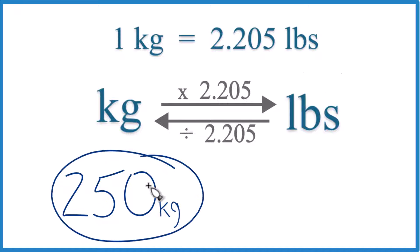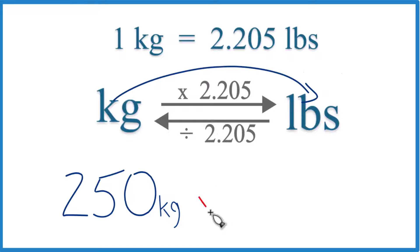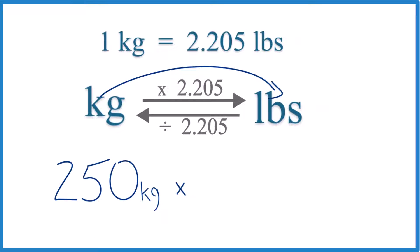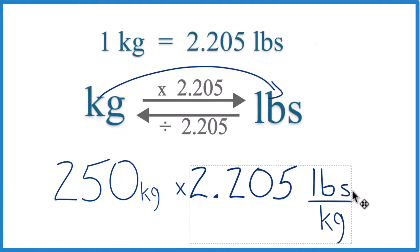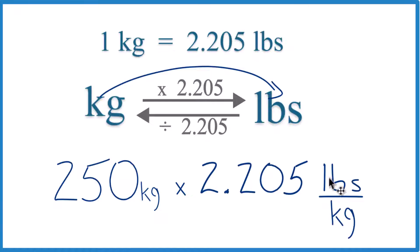Here we have 250 kilograms. So we're going kilograms to pounds, and we're going to multiply by 2.205 by that conversion factor. And what's nice is that's 2.205 pounds per kilogram. That comes directly from our conversion factor here.